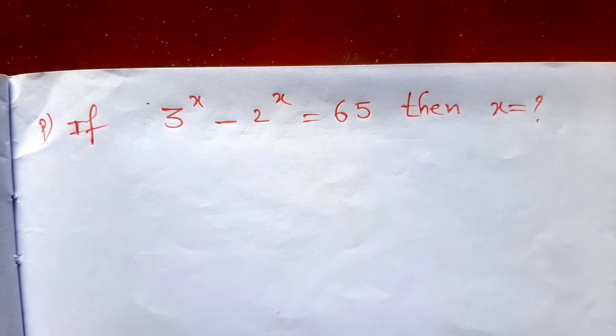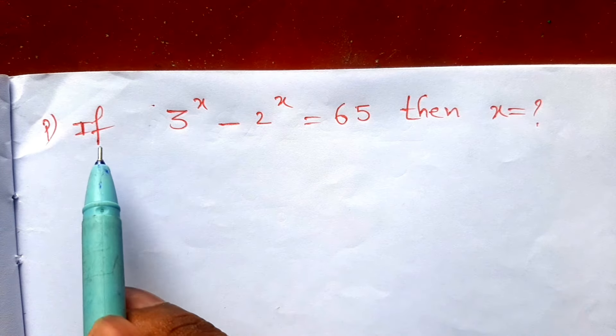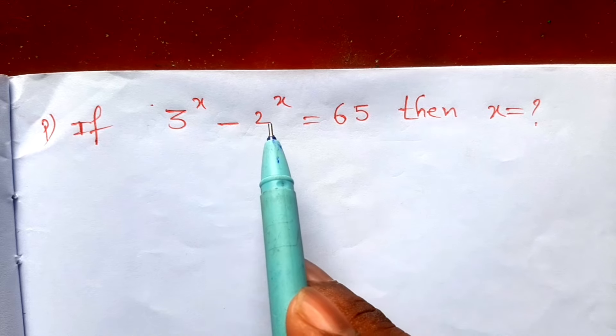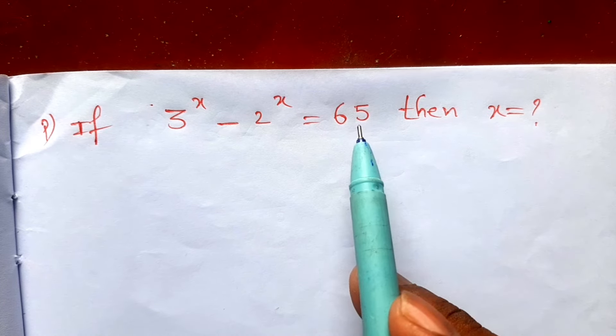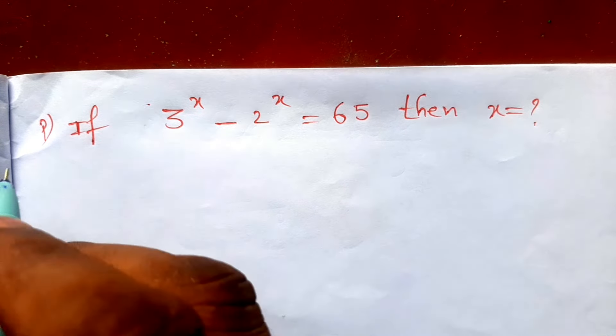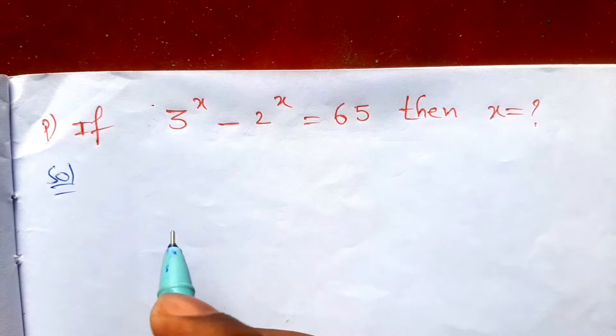Hi everyone, welcome back to Surya math channel. See this problem: if 3 to the power x minus 2 to the power x is equal to 65, then x equal to how much? See the solution. First of all, write the given values.